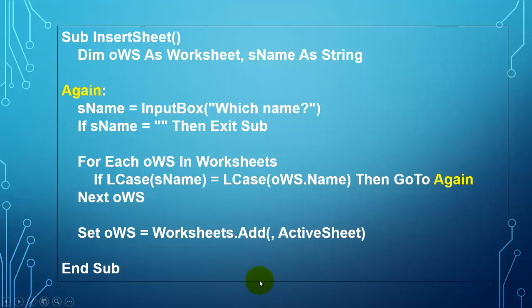And if we do have a correct name, then we add to the collection of worksheets. We add a new one before or after something. I'm not going to add it before, but after the active sheet. That's what the comma stands for. And I assign that name that I had checked in the loop.